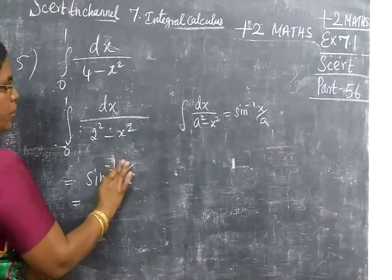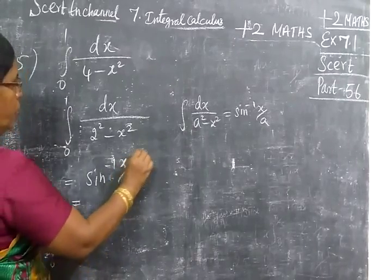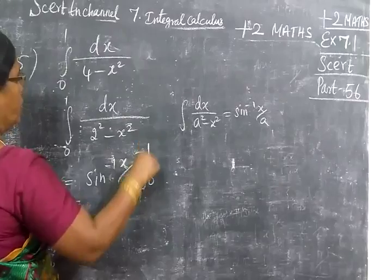instead of x, you are keeping x as it is. Instead of a, you are writing 2. Now the limit is 0 to 1.